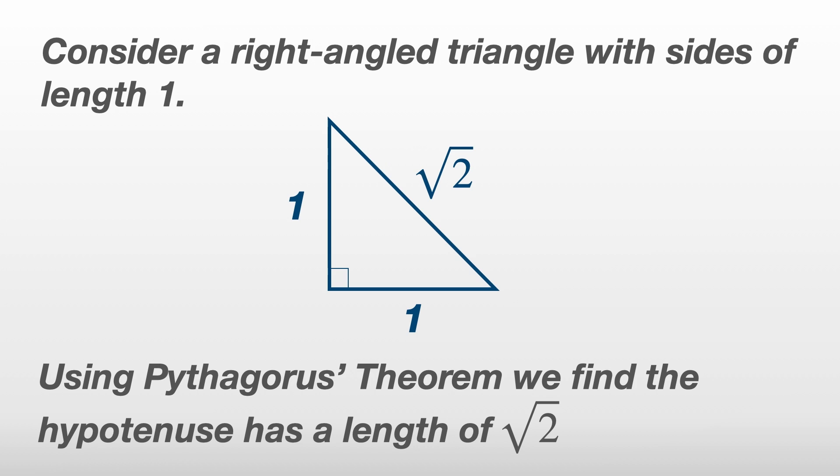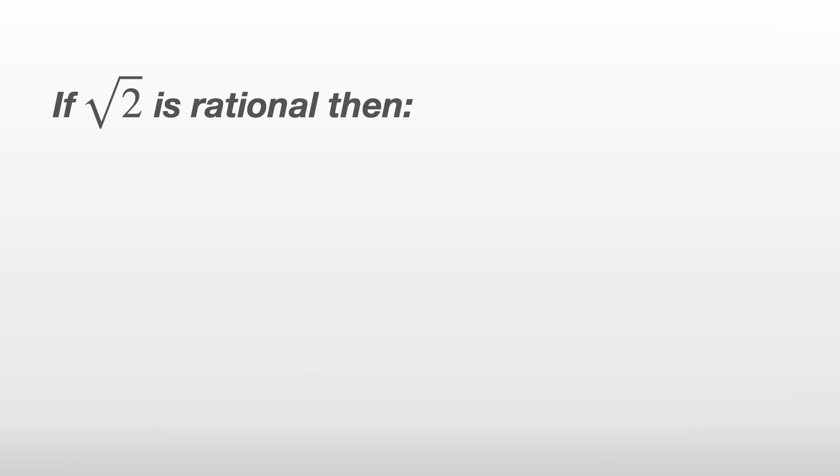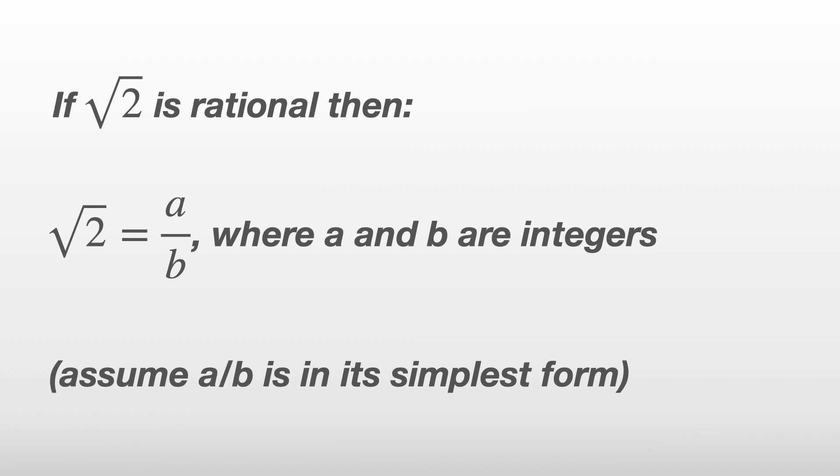Now this is a perfectly fine triangle, nothing wrong here. So we'll go ahead and we'll assume that the square root of two exists, and as the Pythagoreans believed, is rational. If the square root of two is rational, we can write it down as a divided by b, where a and b are just some integers. Let's assume any common factors have been taken out, so a over b is in its simplest form. We'll play around with the algebra and see where this leads us.